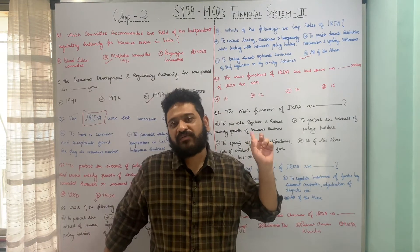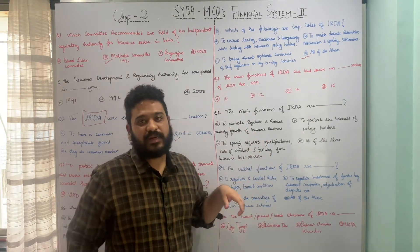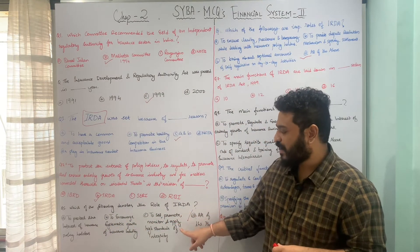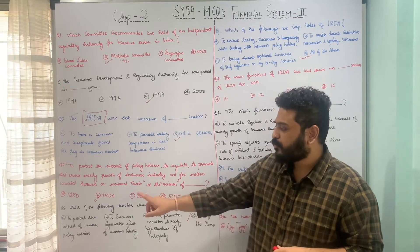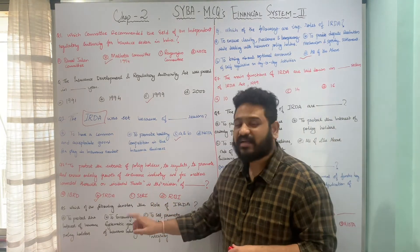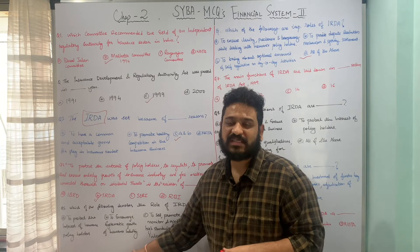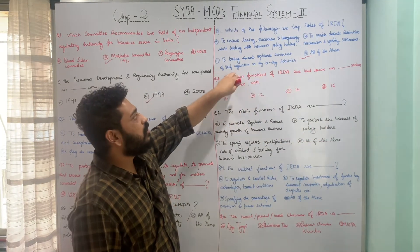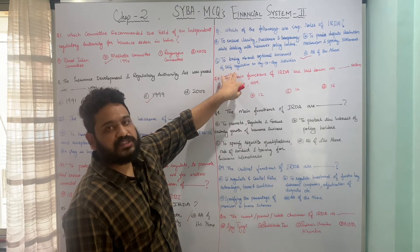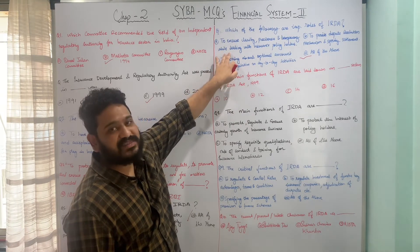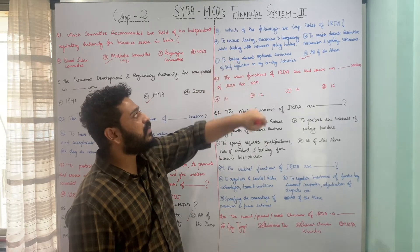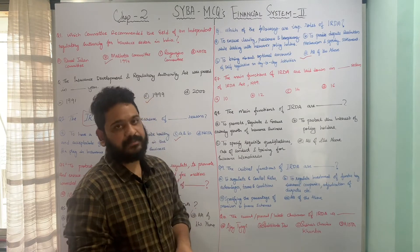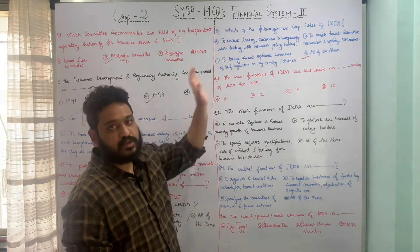So we have now seen six important roles of IRDA: to set, promote, monitor and apply high standards of integrity; to protect the interest of insurance policyholders; to encourage systematic growth of insurance business in India; to provide dispute resolution mechanism and speedy settlement; to bring about optimal amount of self-regulation in day-to-day business; and to ensure clarity, preciseness and transparency while dealing with insurance policyholders.